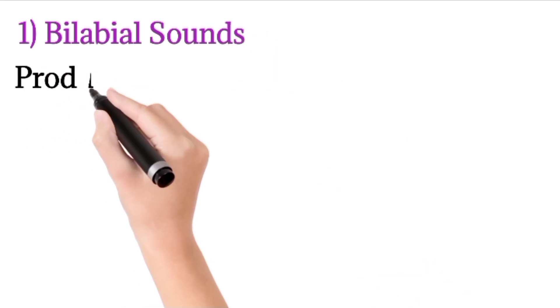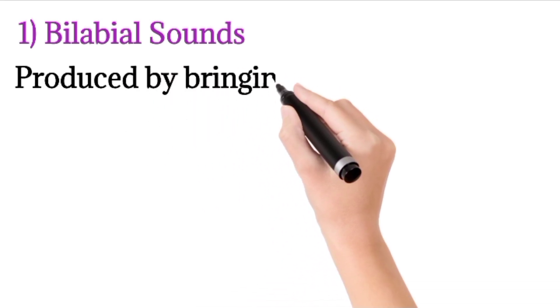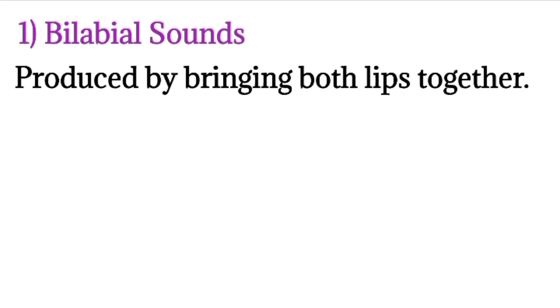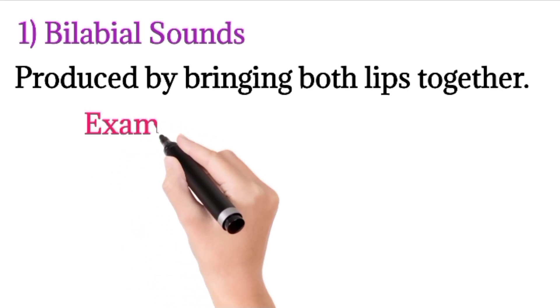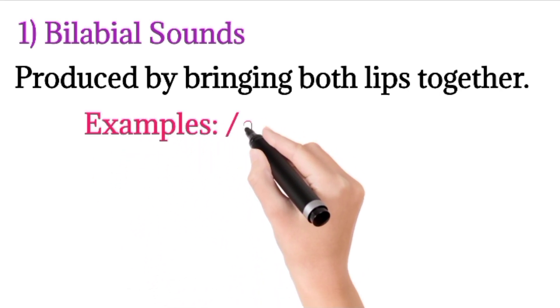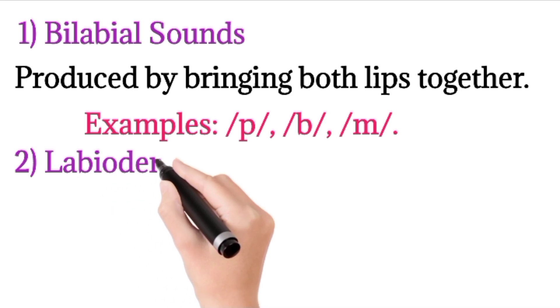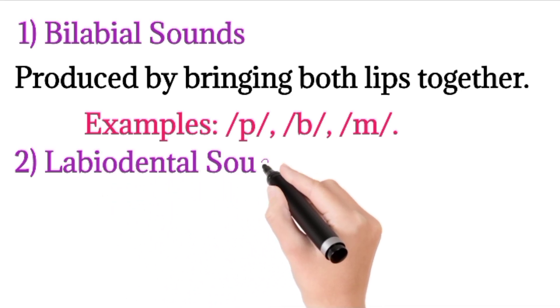The first place of articulation is bilabial sounds. 'Bi' means two, and 'labial' means lips. These sounds are produced when we join two lips together. For example: /p/, /b/, /m/. When we produce these three sounds, we are joining our two lips together — without joining the lips, we cannot produce these sounds.